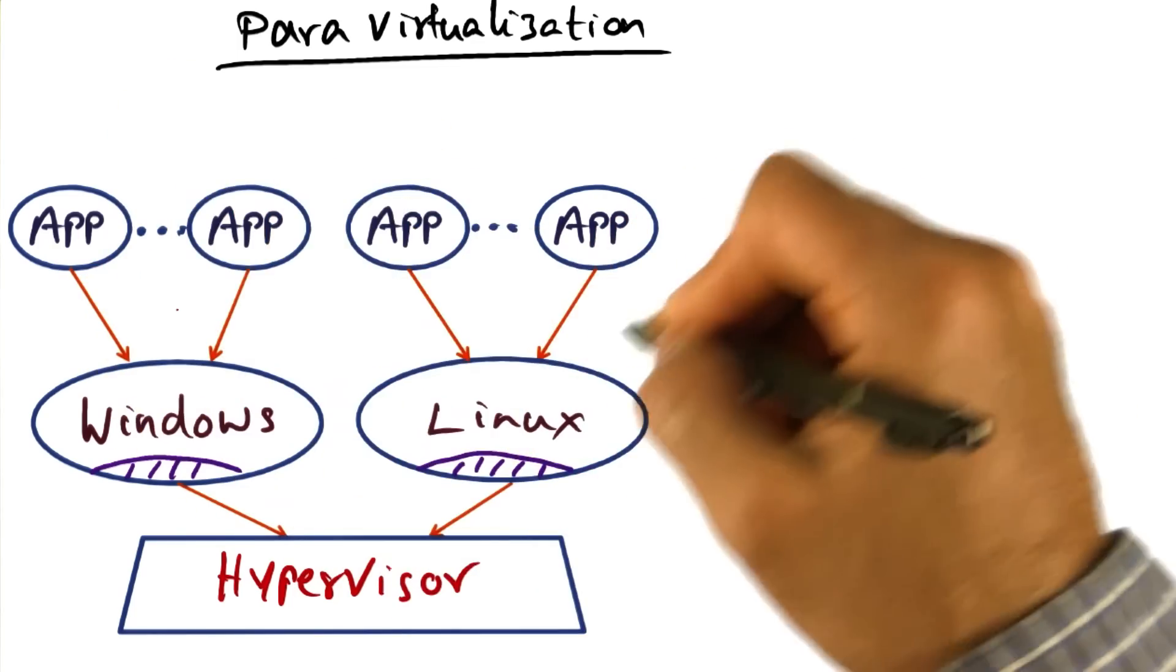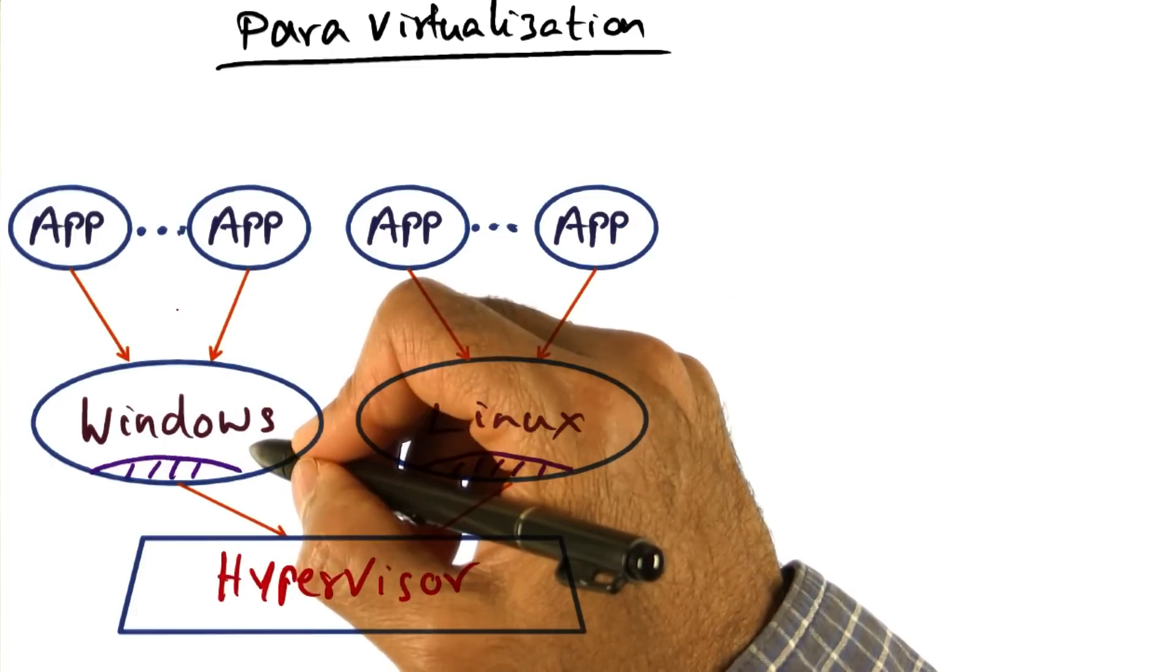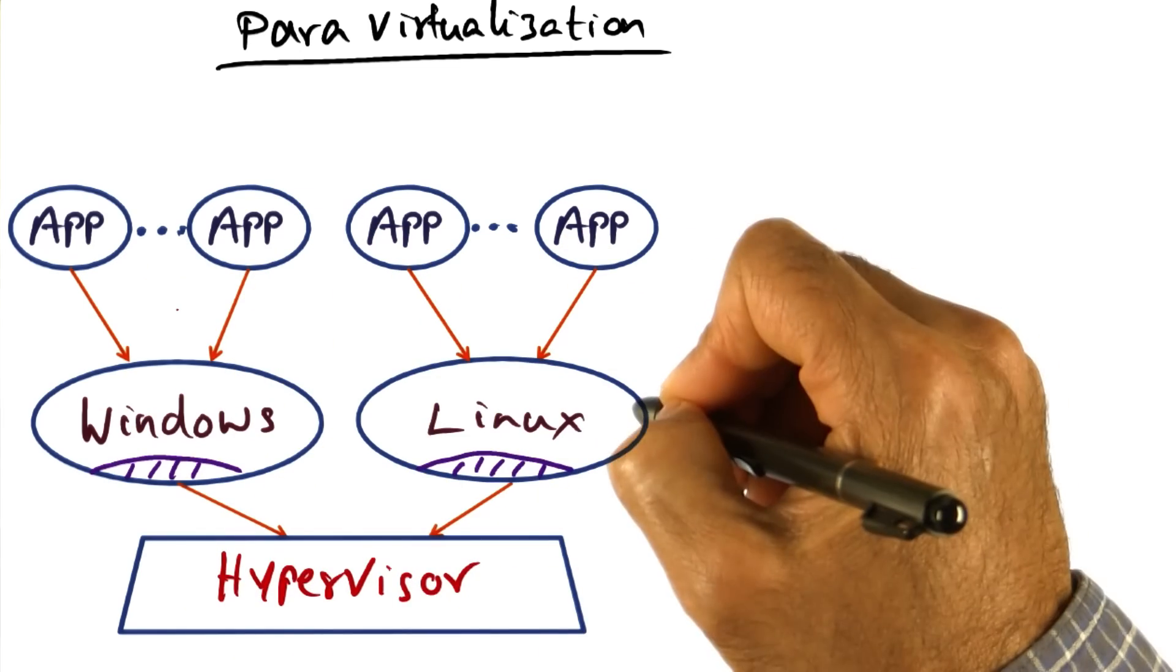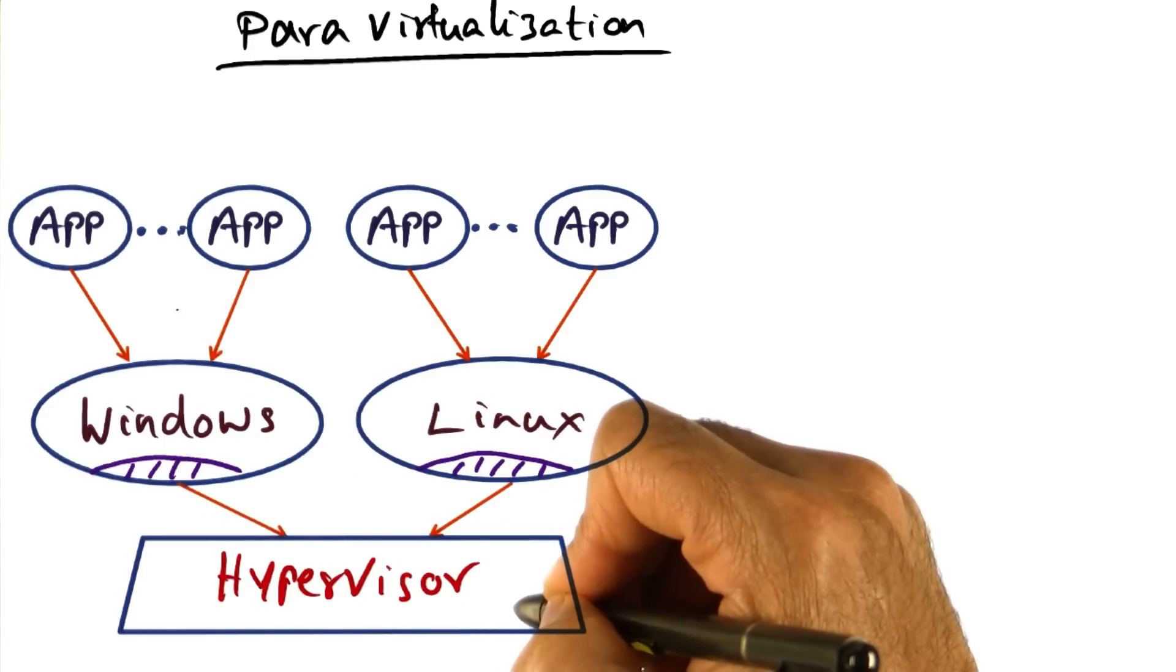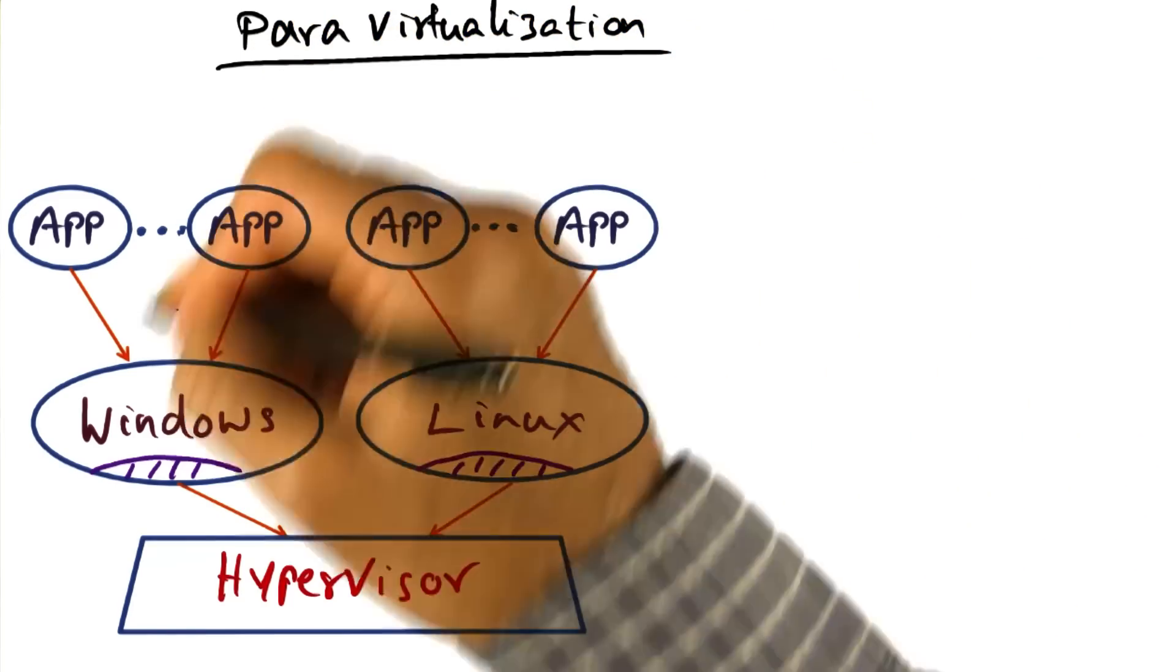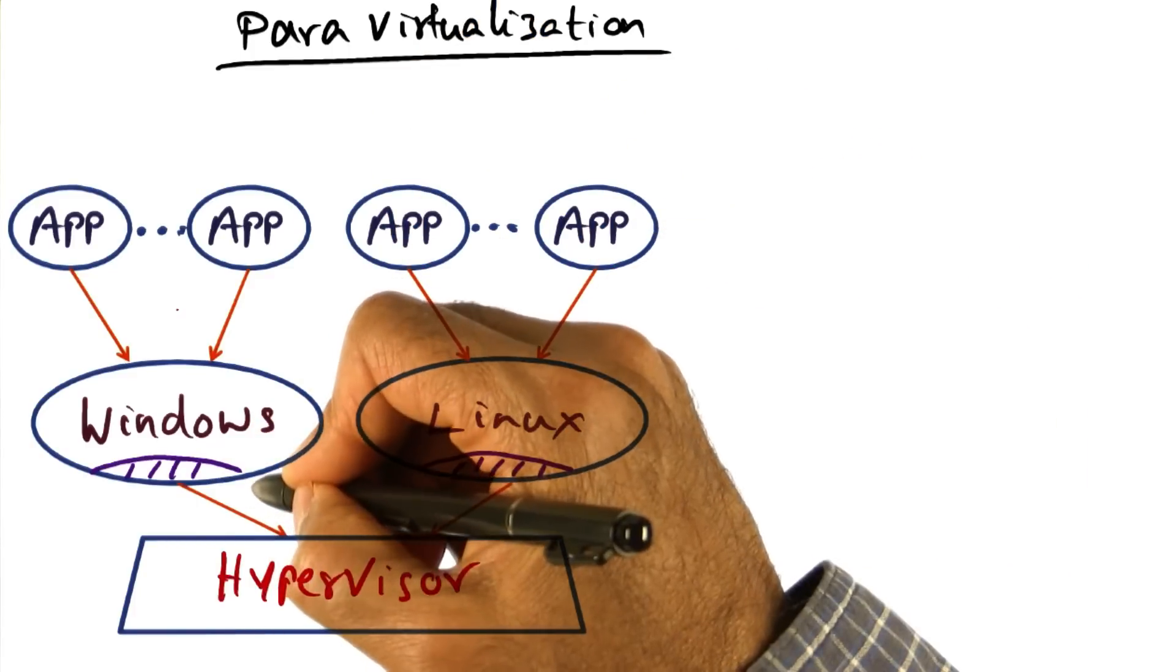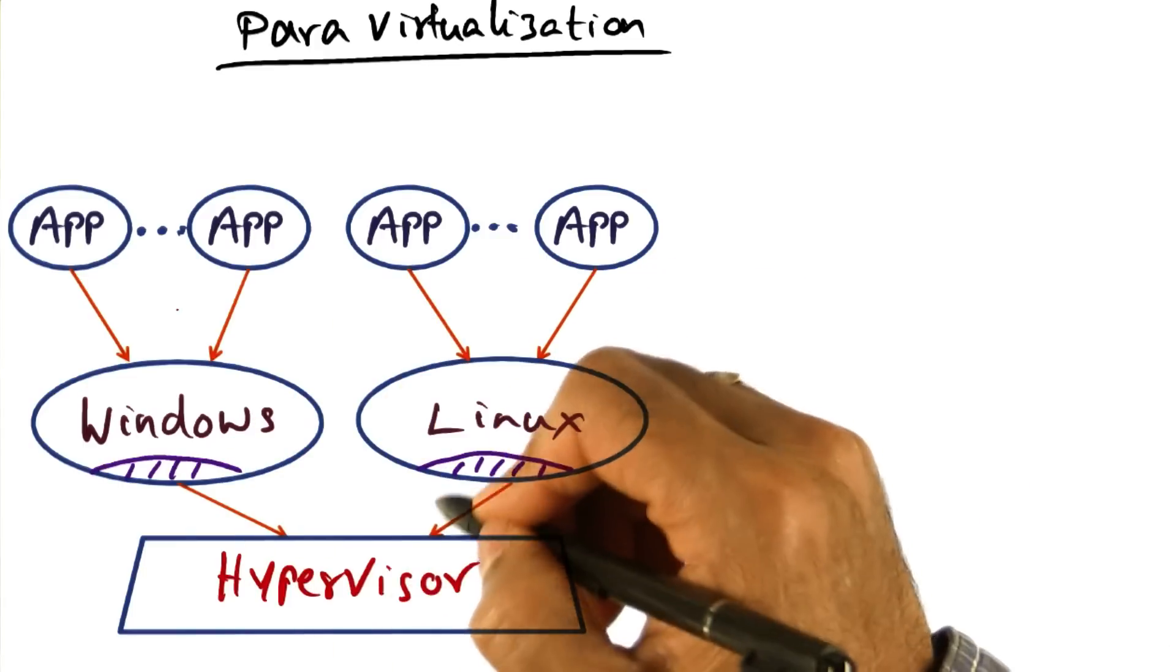In this sense, there's no change to the applications themselves, but the operating system has to be modified in order to account for the fact that it is not running on bare metal, but it is running as a guest of the hypervisor. And this is why this technology is often referred to as para-virtualization, meaning it is not fully virtualized, but a part of it is modified to account for being a guest of the hypervisor.